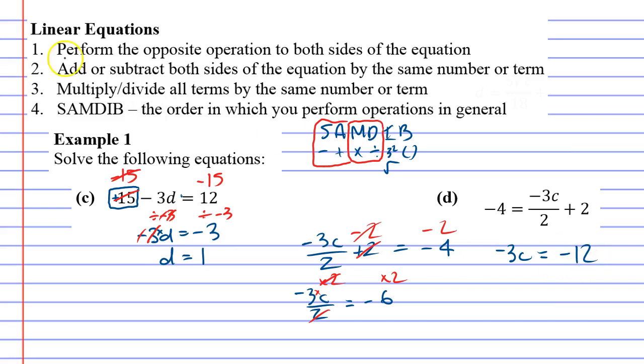All right. Last step. This is negative 3 times c. We're going to do the opposite. We're going to divide by negative 3 on both sides. Cancelling out the negative 3 gives us c equals negative 12 divided by negative 3 is 4.